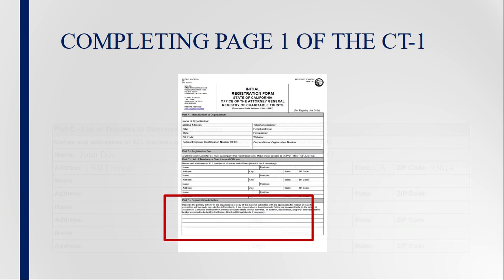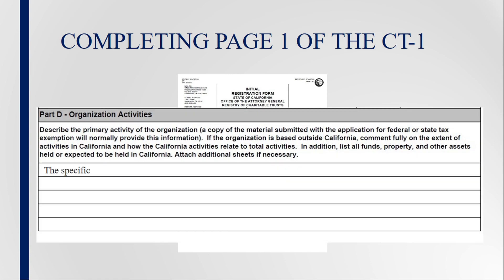Next, describe in detail the charitable purpose or mission of the organization. If the organization is based outside of California, include a detailed description of the activities in California and how the California activities relate to the organization's primary charitable purpose. In addition, list all funds, property, and other assets held or expected to be held in California.